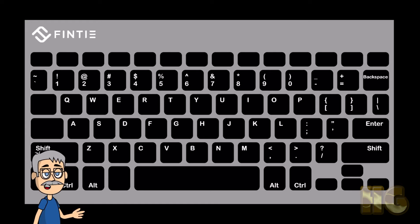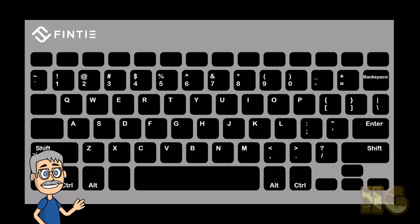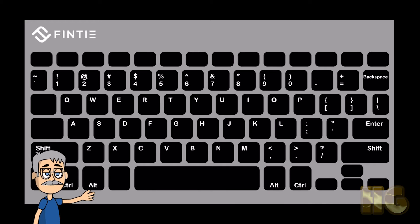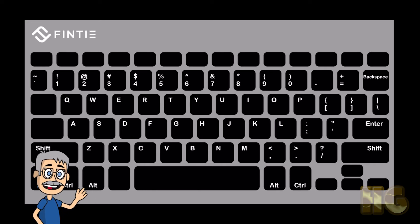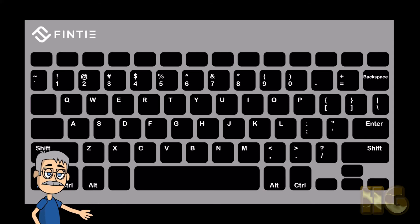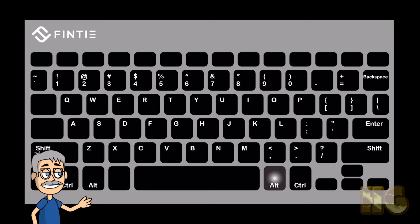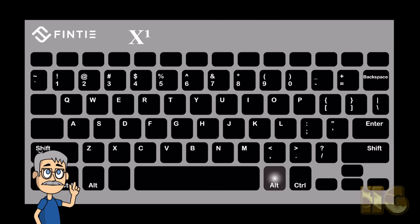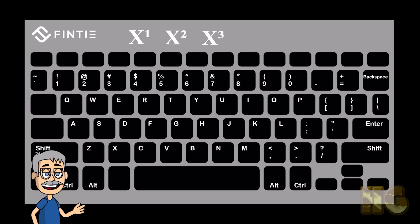For special characters, there are several available to you. The inverted question mark can be found by hitting together the right ALT and the question mark. The inverted exclamation mark is produced by hitting the right ALT together with the number 1. Exponential numbers 1, 2, and 3 can be conjured up by using SHIFT plus right ALT and the number — 1, 2, or 3. Beyond that, they are not available.